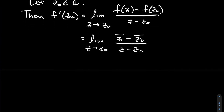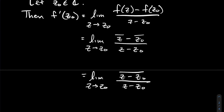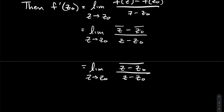The difference of two conjugates is just the conjugate of the difference, so I can put one big bar over the numerator. I notice the numerator is the conjugate of the denominator — that's nice. As z approaches z₀, both numerator and denominator go to zero, giving an indeterminate form. So I need some tricks to handle this.